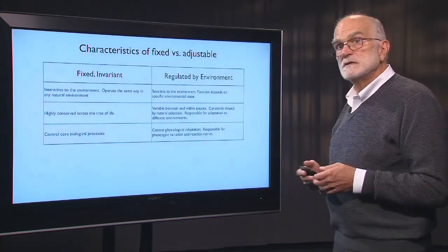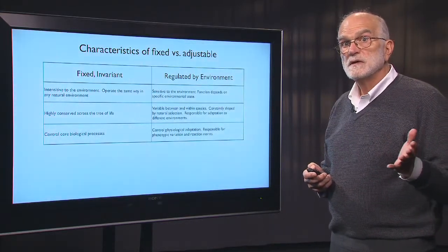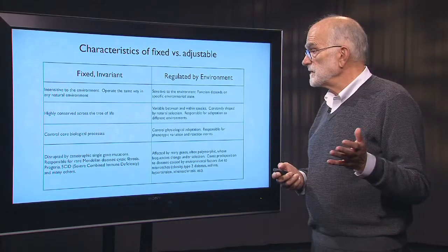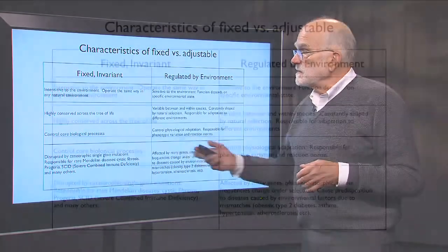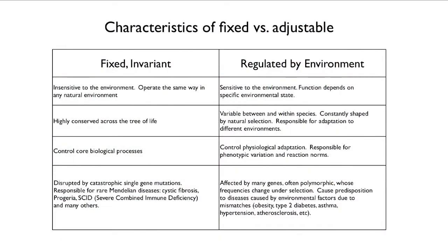The fixed reactions control core biological processes, and the adjustable reactions control physiological adaptation — they are responsible for phenotypic variation and reaction norms. Fixed reactions can be disrupted in a catastrophic way by a single gene mutation. They are responsible for things like cystic fibrosis, progeria (unnaturally rapid aging), SCID (severe combined immune deficiency), and many other innate diseases.